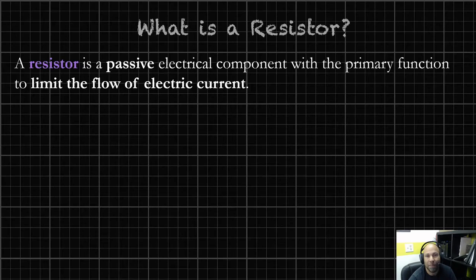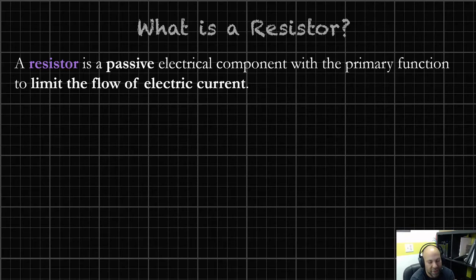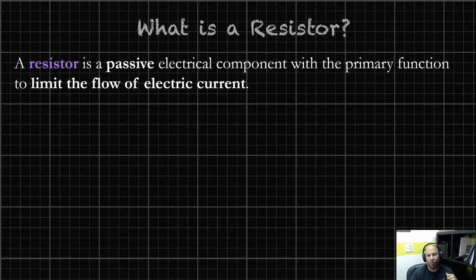So what is a resistor? A resistor is a passive electrical component for which the primary function is to limit the flow of electrical current. A key word here: passive. We're adding a component into our circuit so that we can start to manipulate the electricity and energy within our circuits and our projects, but we don't require any energy itself to make this component do its job. It does it by its very nature, so it is a passive component.